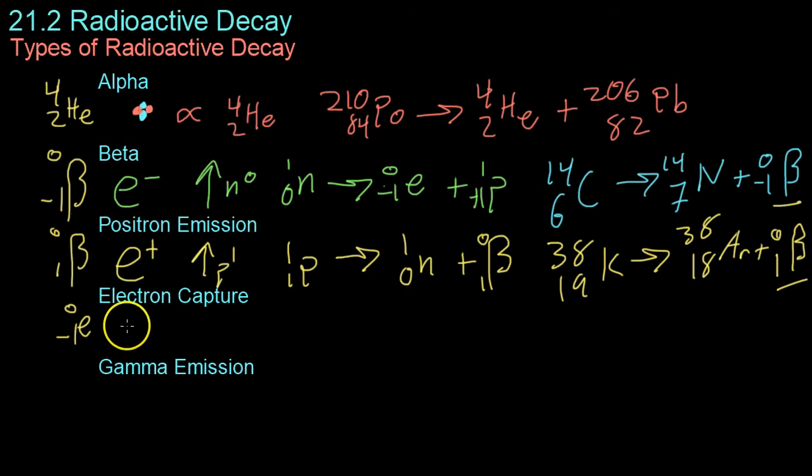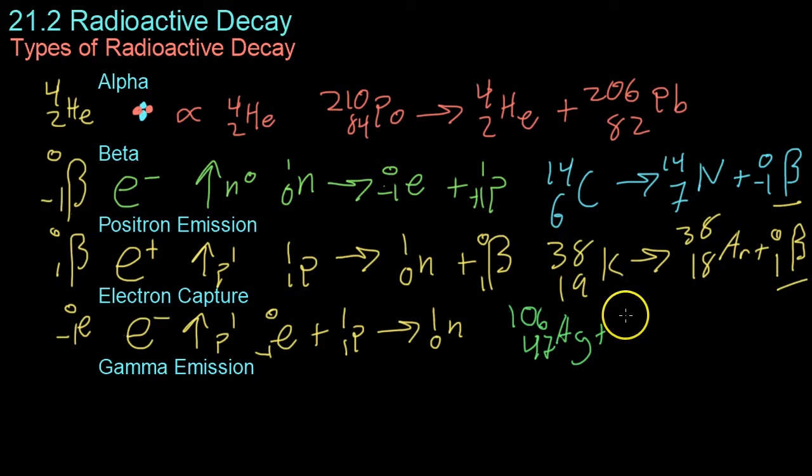Another way for radioactive decays to occur is actually to capture an electron. So if there are, once again, too many protons in a nucleus, sometimes a nucleus will absorb one of its inner shell electrons, and then that will combine with a proton to form a brand-new neutron. For example, silver-106 can capture one of its inner electrons to yield palladium-106.